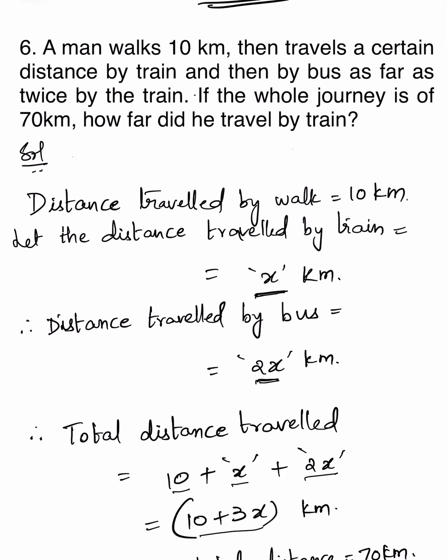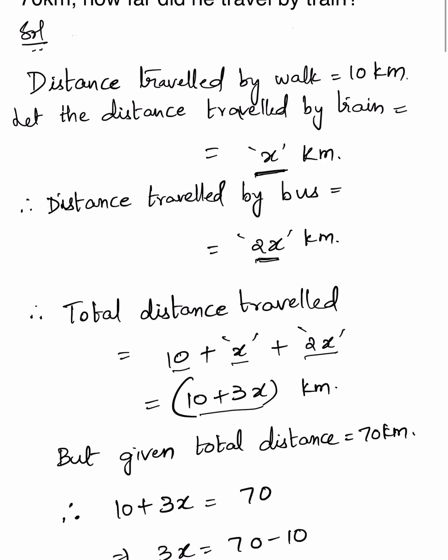Total distance traveled will be 10 plus x plus 2x — that is, distance traveled by walk plus distance by train plus distance by bus — which equals 10 plus 3x km. But it is given in the question that the total distance traveled is 70 km, so let us equate these two.